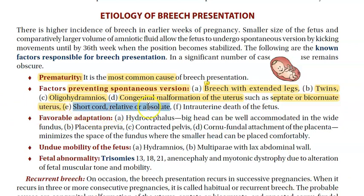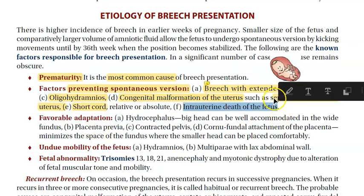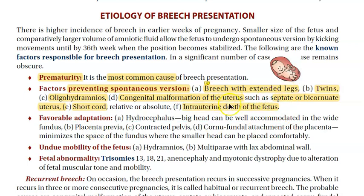Short cord, relative or absolute: the umbilical cord is so short that the baby cannot turn — from the placenta to the baby, the cord is relatively short, so it cannot turn. Intrauterine death of the fetus: the baby will not turn, so at that time it can also be a breech presentation.